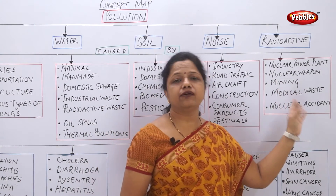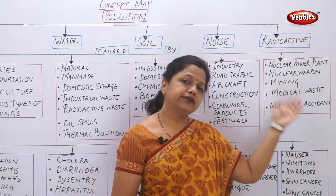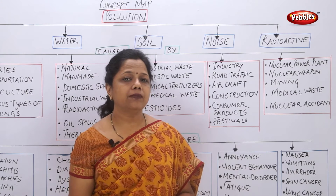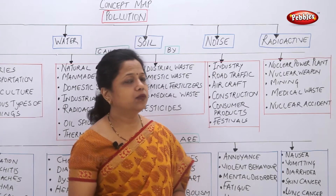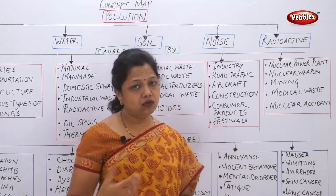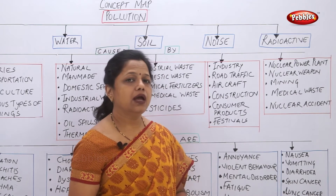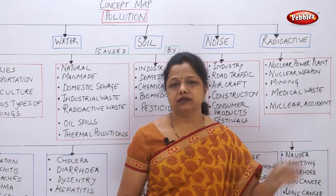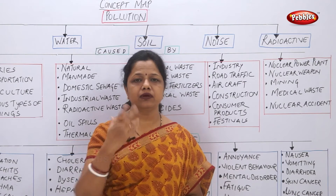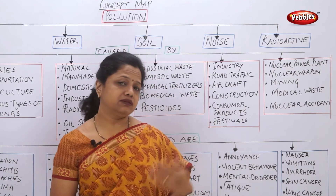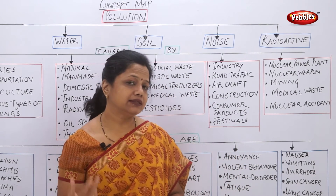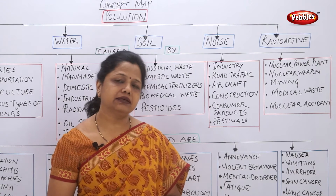The fifth type is radioactive pollution. What causes it? Nuclear power plants that use the nucleus of the atom create many types of chemicals, adding to radioactive pollution. Nuclear weapons also create pollution where used. Mining, including coal mining, releases radioactive elements, causing radioactive pollution. Medical waste — radioactive elements like uranium used in medical research — adds to pollution. Nuclear accidents in power plants or weapons facilities also create radioactive pollution.